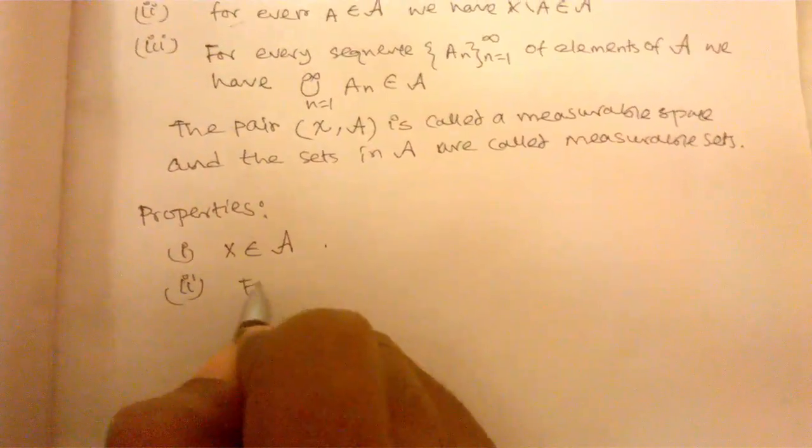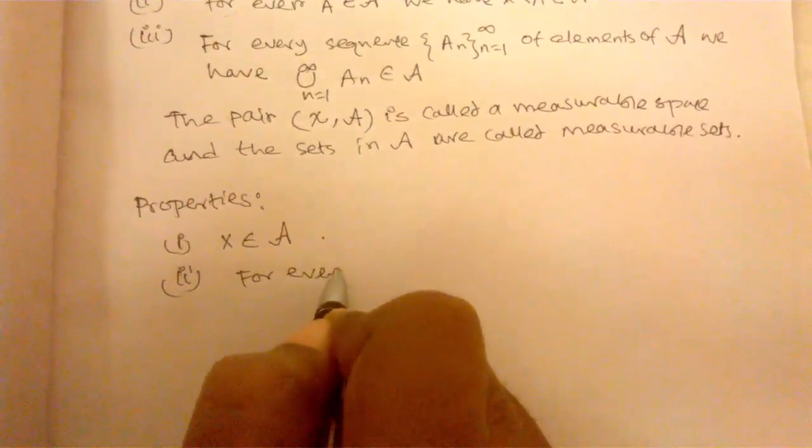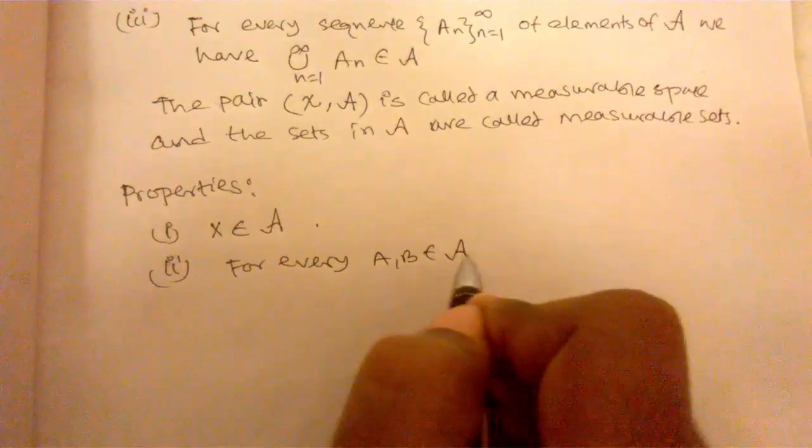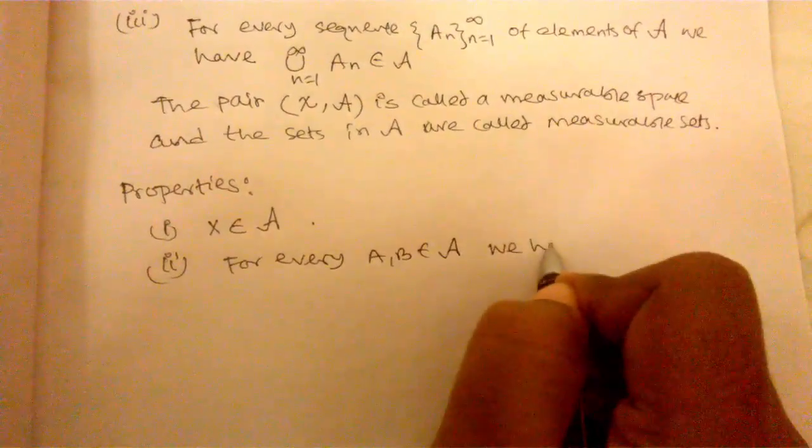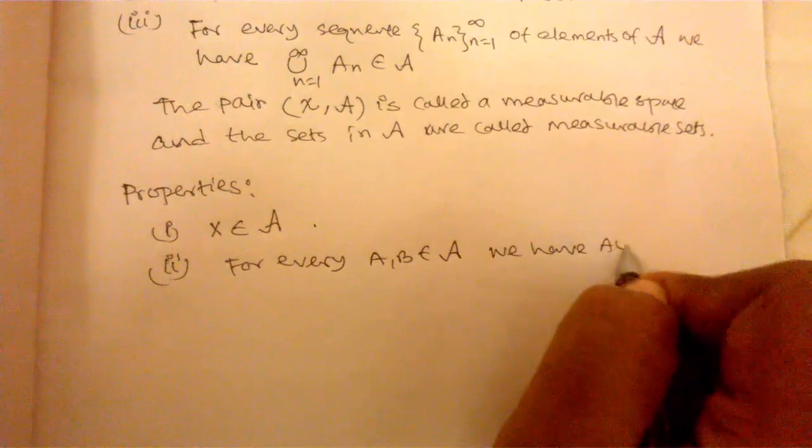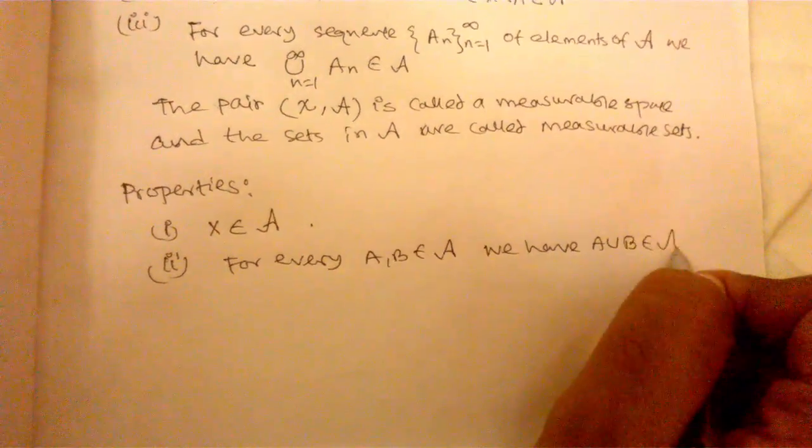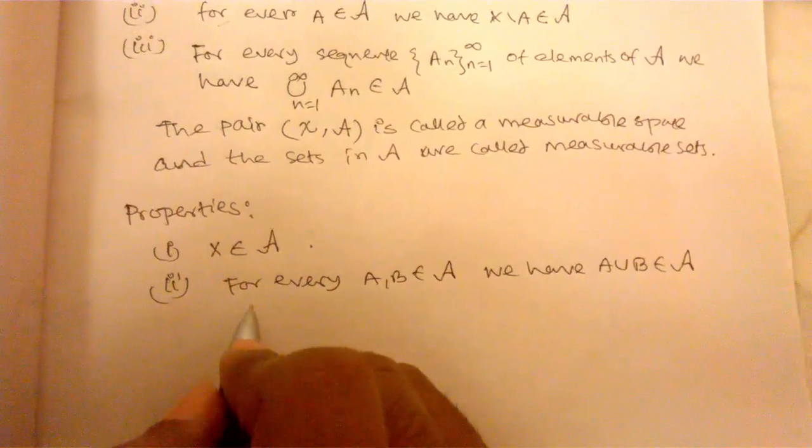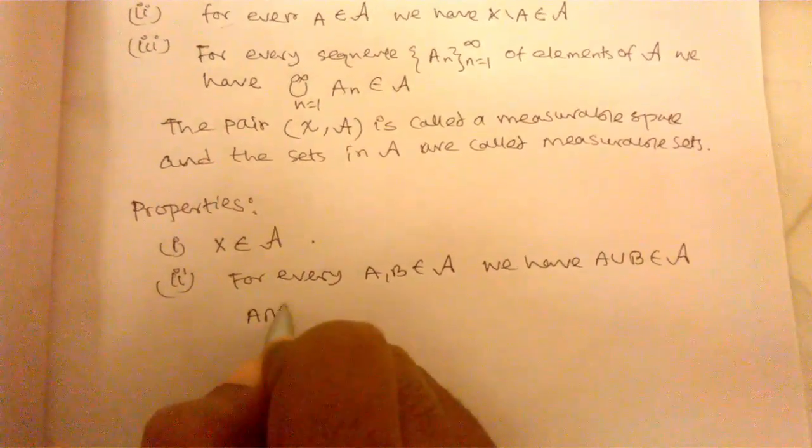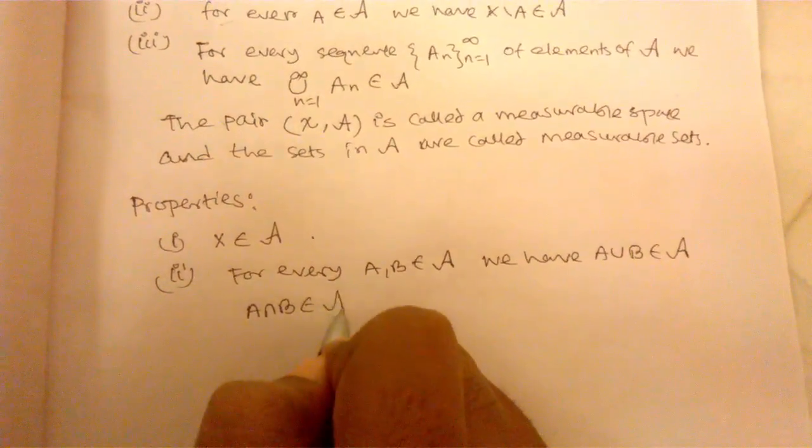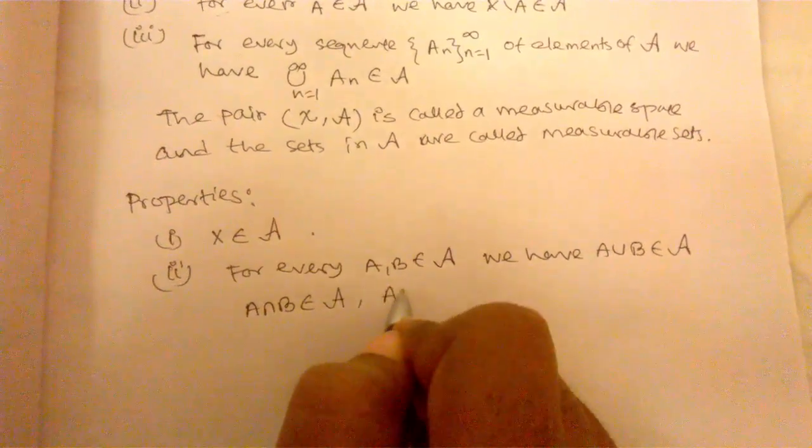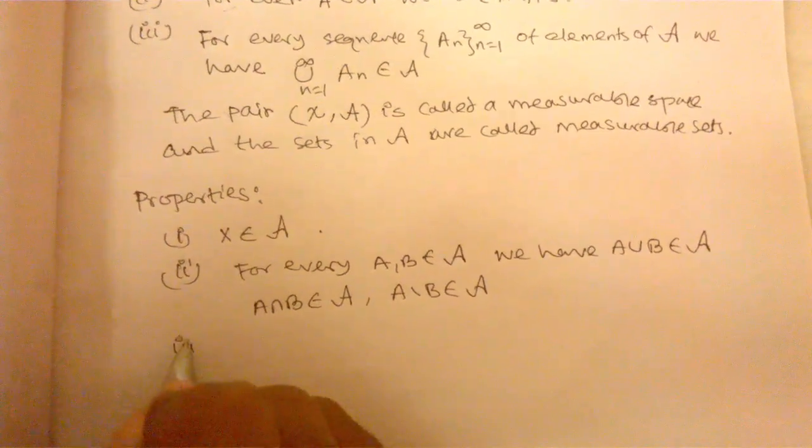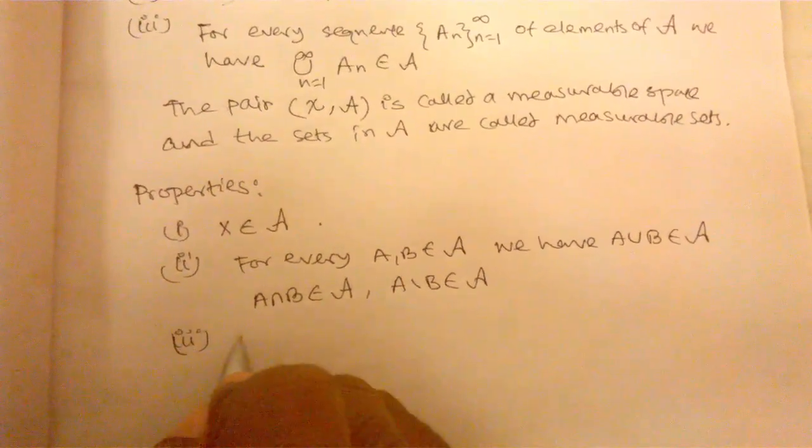Number 2, for every A, B belongs to the collection A, we have A union B belongs to the collection A, and A intersection B belongs to the collection A, obviously from these three properties above.